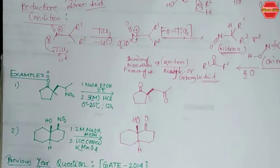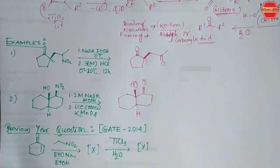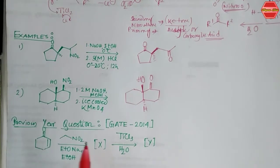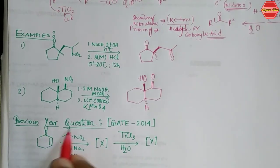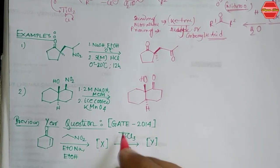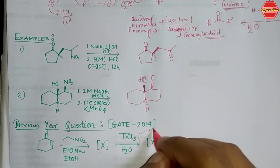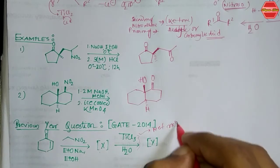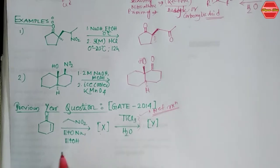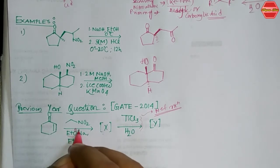Now let's look at a previous year question from GATE 2014. A substrate is given with two reagents, and you have to predict products X and Y. Given TiCl₃ in one of the steps, you can identify that as the Neff reaction step. For the first step, sodium ethoxide (EtO⁻ Na⁺) in ethanol is given.